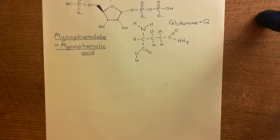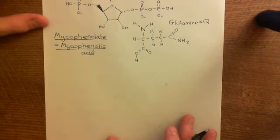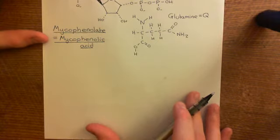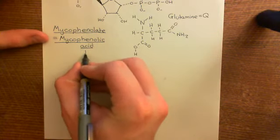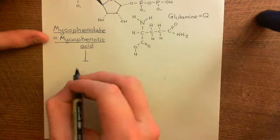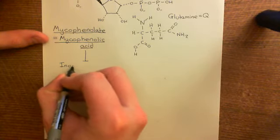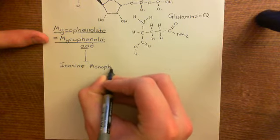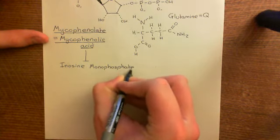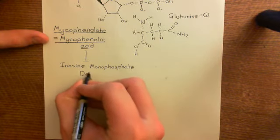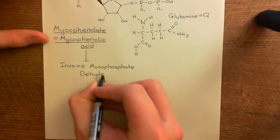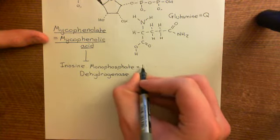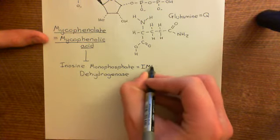Mycophenolate works by blocking an enzyme known as inosine monophosphate dehydrogenase — often abbreviated to IMP dehydrogenase — where IMP stands for inosine monophosphate.